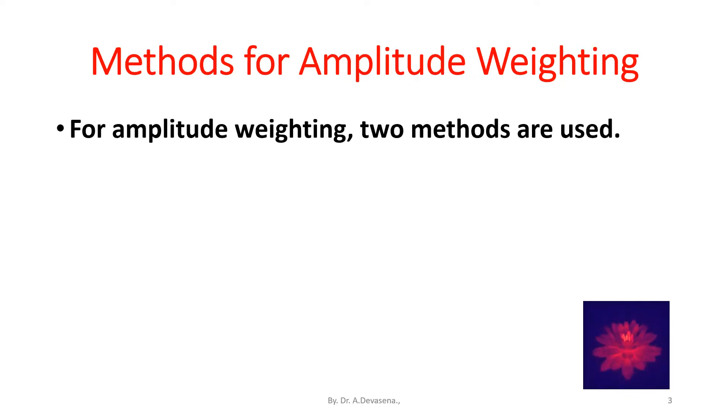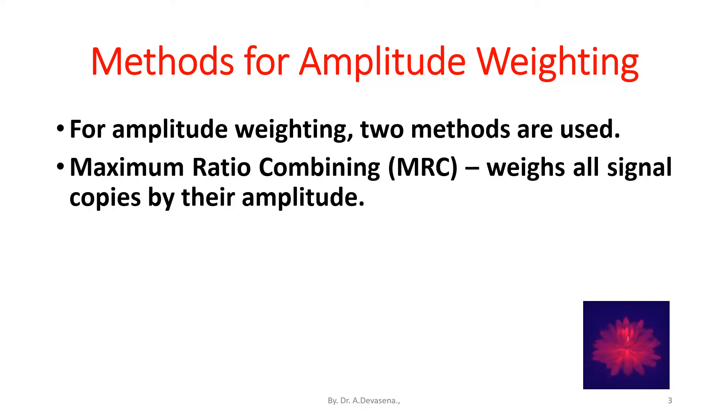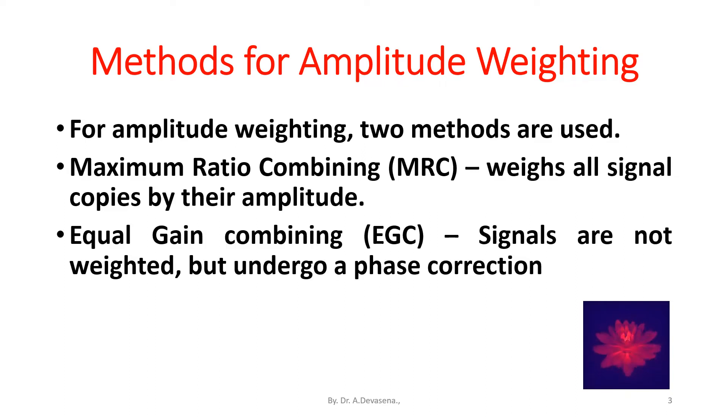Amplitude weighting, two methods are used. They are maximum ratio combining method, that is MRC. It weighs all signal copies by their amplitude. The next method is equal gain combining, that is EGC. The signals are not weighted in equal gain combining but undergo a phase correction.